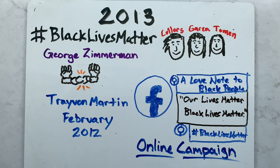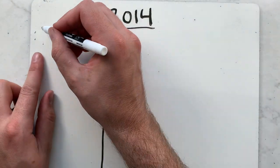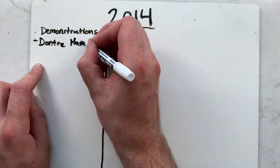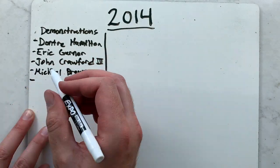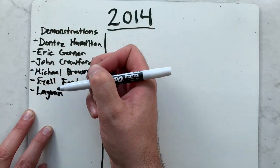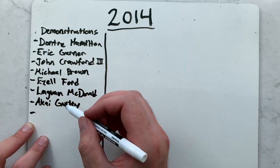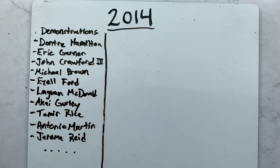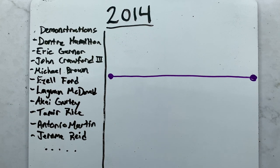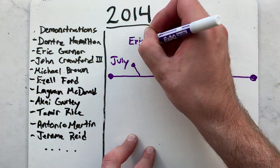Please note that as I go through a timeline of events, I am only able to cover a small portion of events and people who were involved in the BLM movement. In 2014, Black Lives Matter demonstrated against the deaths of numerous African Americans by police actions, including those of Dontre Hamilton, Eric Garner, John Crawford III, Michael Brown, Ezell Ford, LeGuan McDonald, Akai Gurley, Tamir Rice, Antonio Martin, and Jeremy Reed, among others.